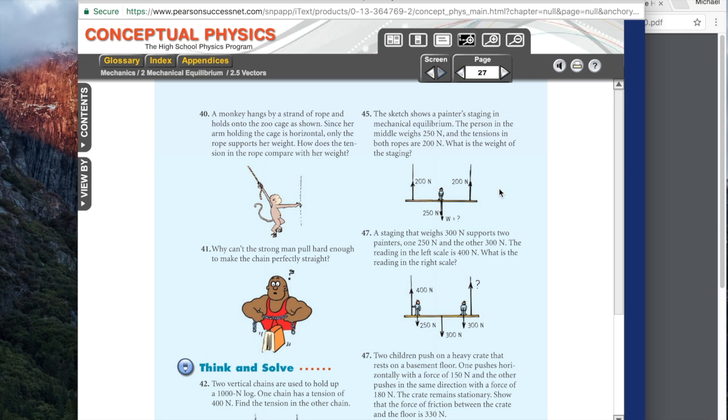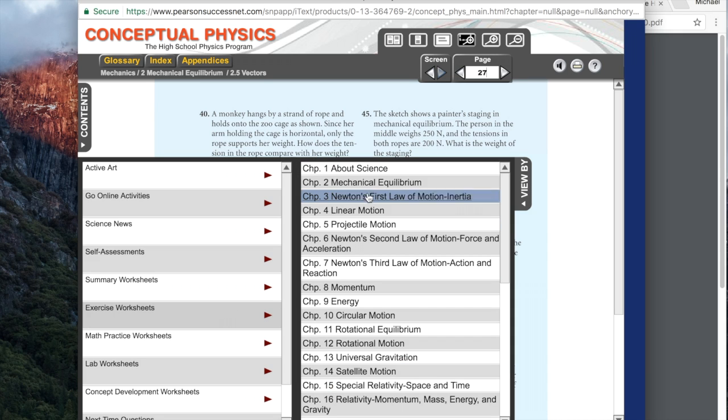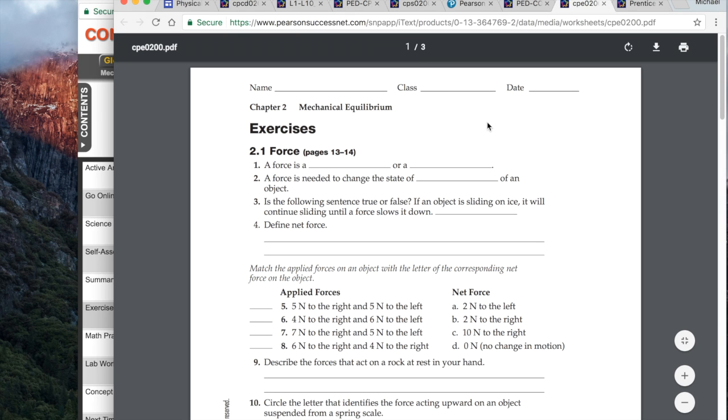You can also access all those different types of documents with this tab over here which is view by. If we click on this, remember we had summary worksheets, the exercise worksheets were those other ones we talked about before, and you can click on by the chapter and then they come up again.